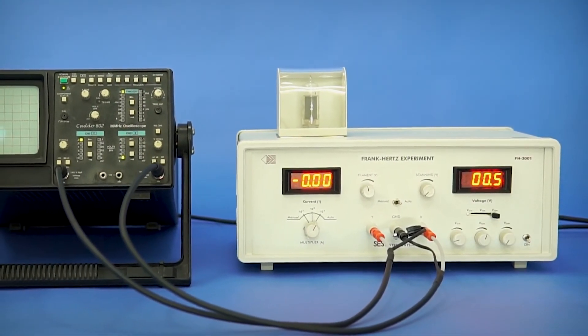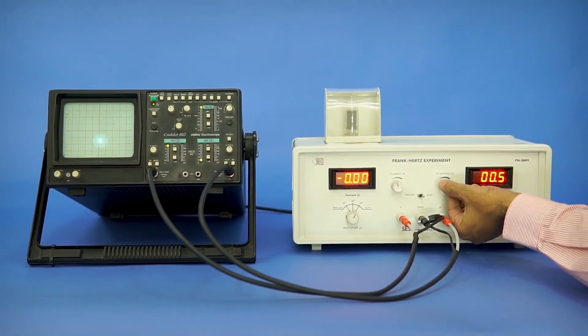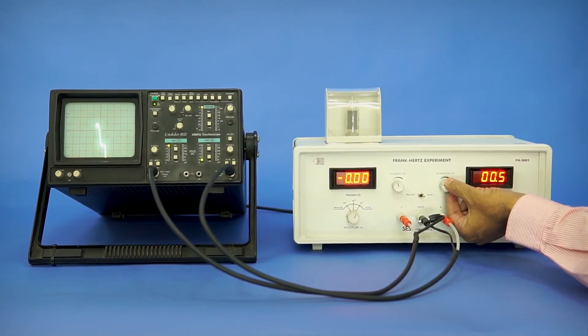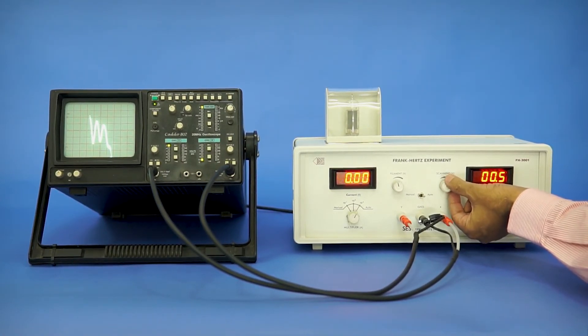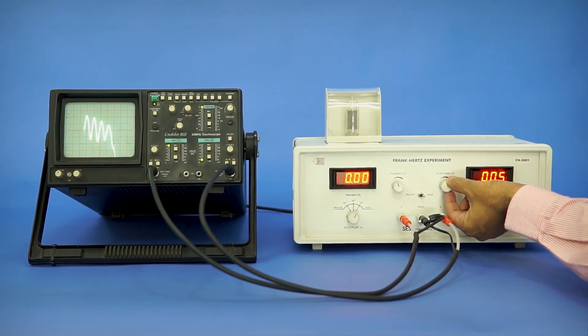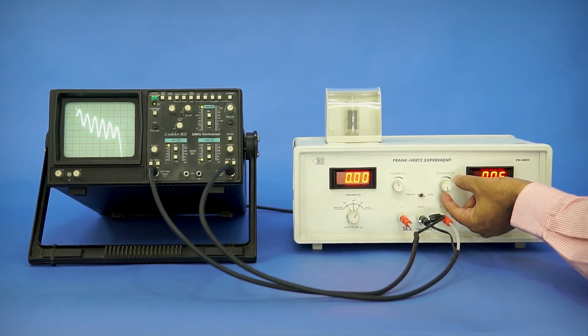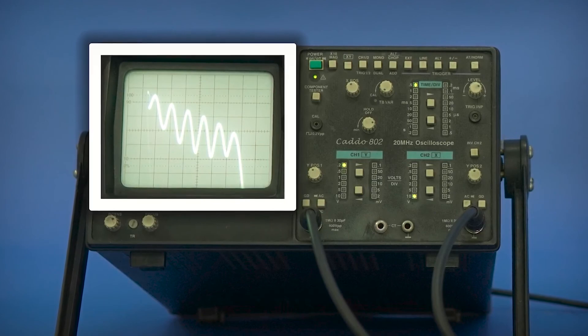Now, slowly increase the scanning voltage. You will see the multiple peaks coming on CRO. These peaks are similar to the graph you get in manual mode.